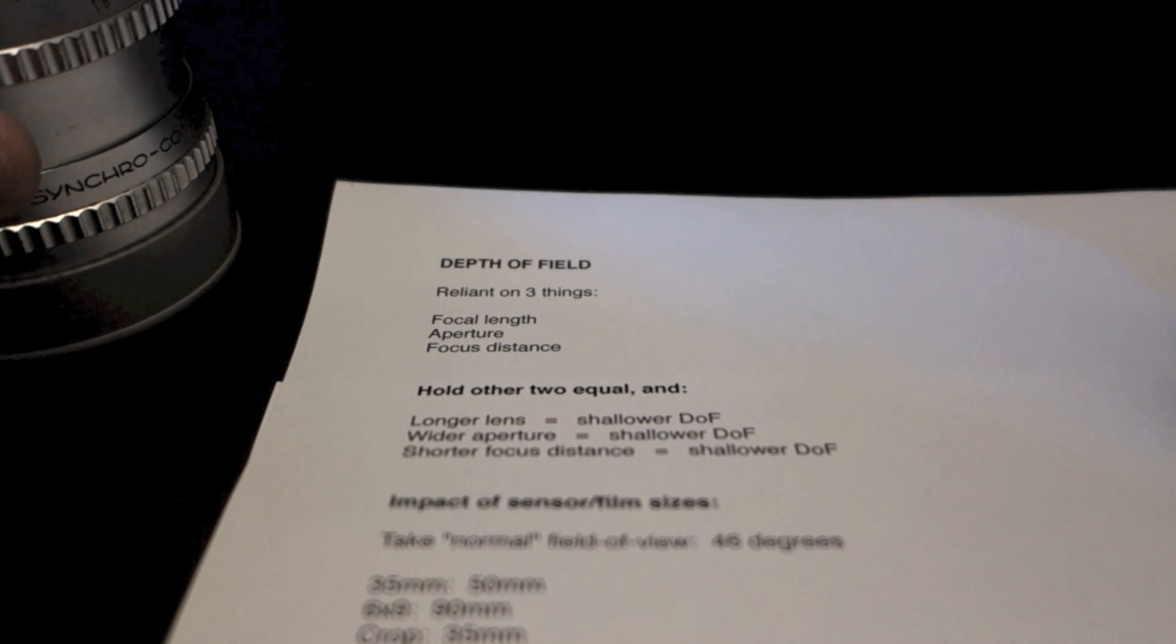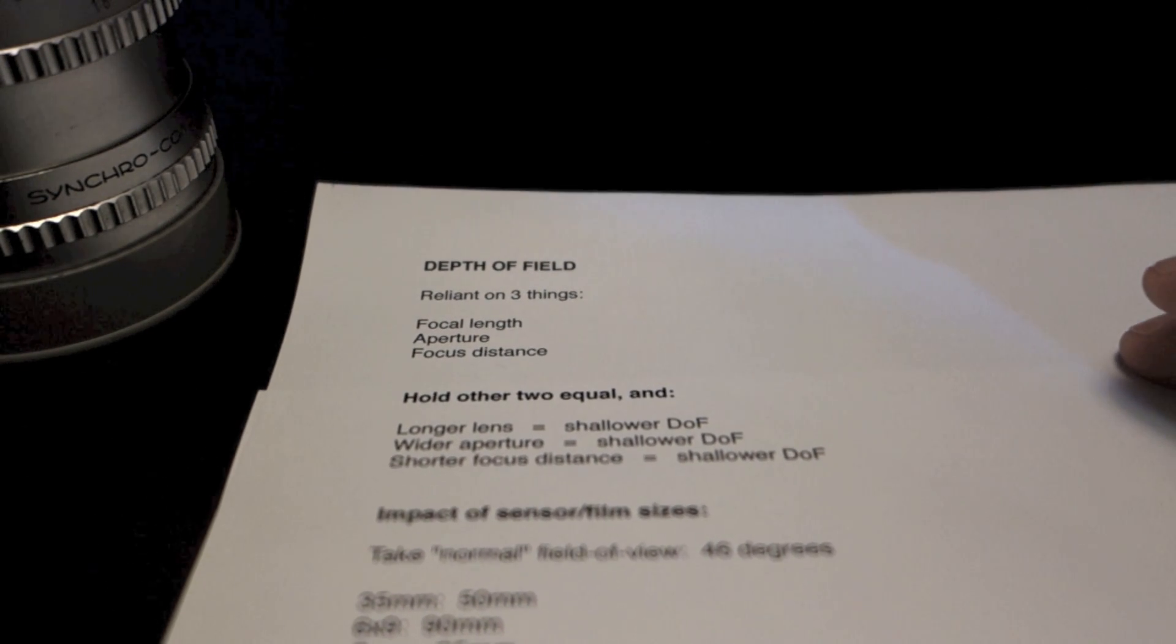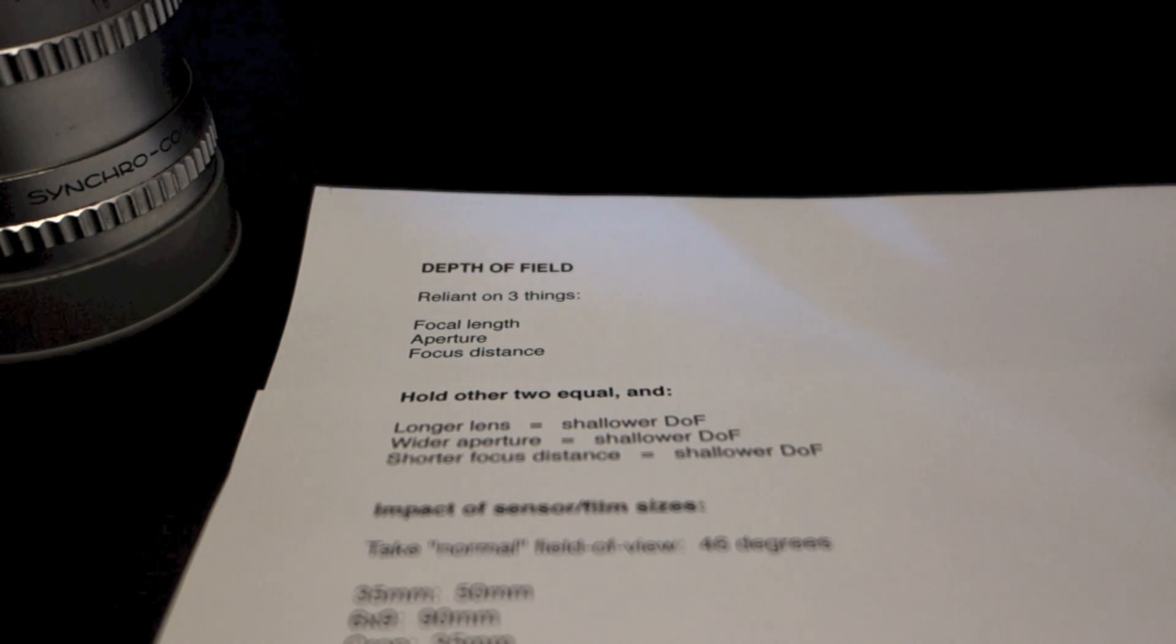So how do those things affect depth of field? Hold any two of those three things equal. And a longer lens will have shallower depth of field than a shorter lens with aperture and focus distance held constant. A wider aperture, meaning a smaller f number, will give you shallower depth of field with the other two variables held constant.